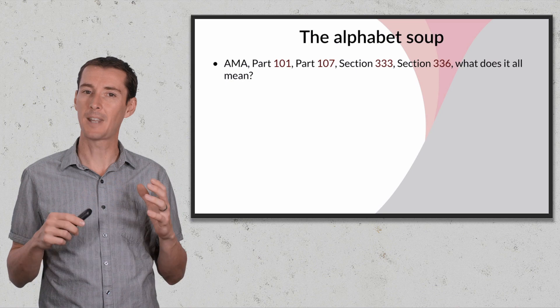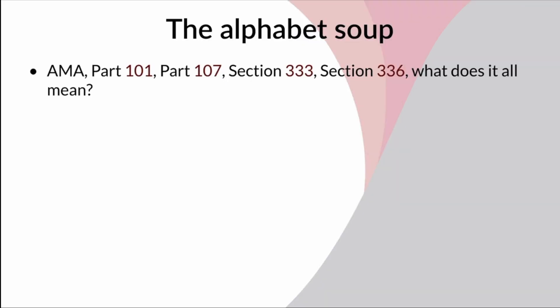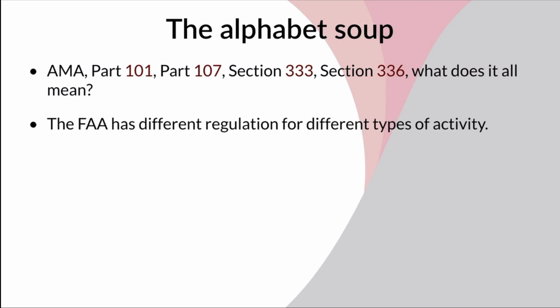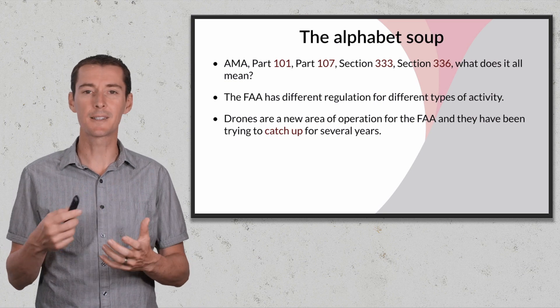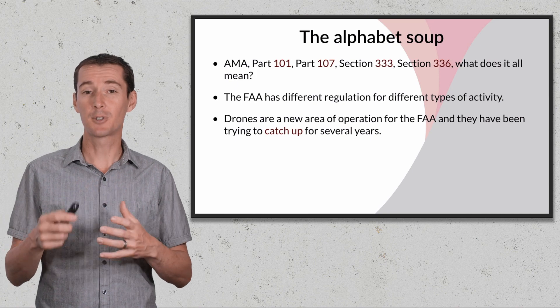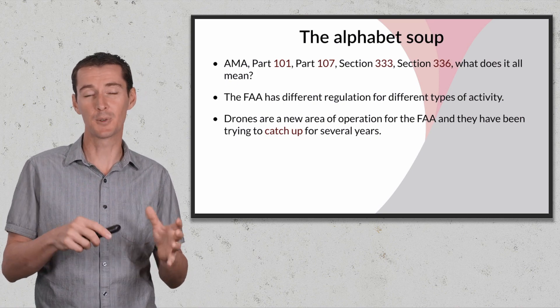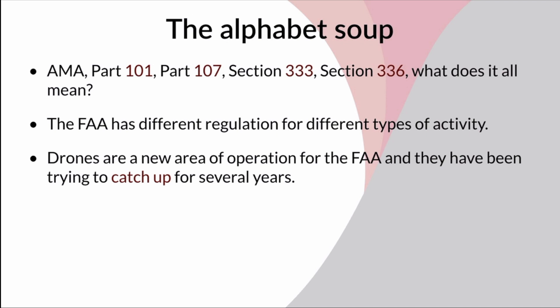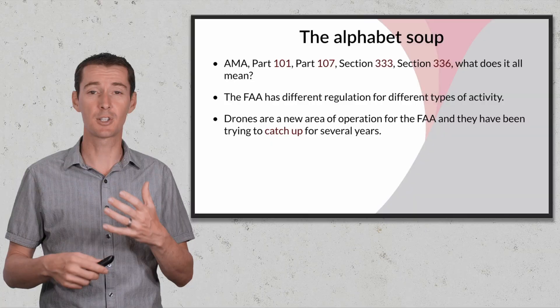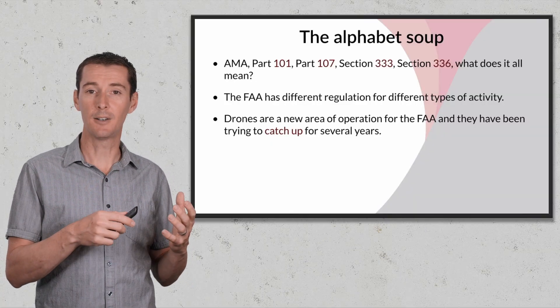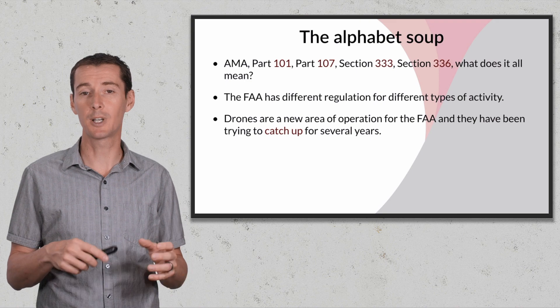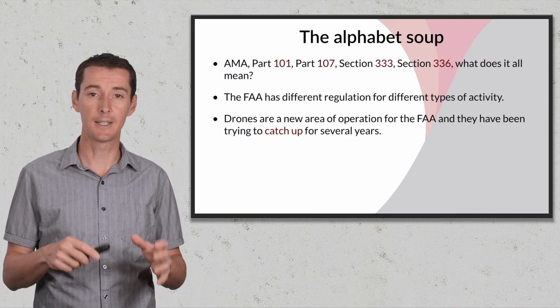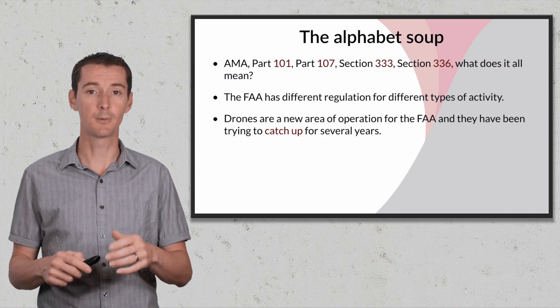So the alphabet soup: AMA, Part 101, Part 107, Section 336, Section 333 — what does this all mean? The FAA has different regulations for different types of flying, all related to drone flying. Because drone flying is a relatively new area for the FAA, they've been trying to catch up with regulation. They've established some rules in the past and are constantly coming up with new stuff. As I'm recording this, the FAA has approved a change that is not yet in place, so what follows is still current regulation — and it is going to change, at least for hobbyists.